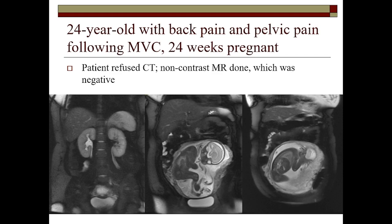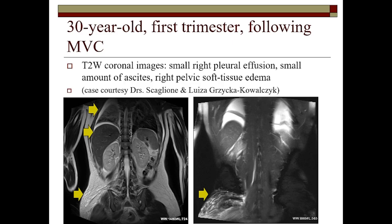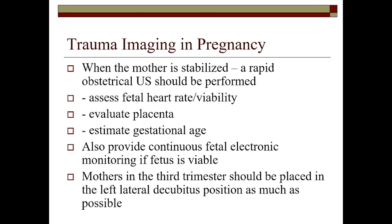Here is a case from my institution a few years ago. The patient was involved in a motor vehicle collision, 24 weeks pregnant. She refused CT because of ionizing radiation concerns. She was stable and had back and pelvic pain. These representative coronal images showed the exam was negative, so we were able to reassure the patient and the clinical team — with a little bit of right hydronephrosis expected at this stage of pregnancy. In contrast, here is an example of a positive MRI scan showing perihepatic fluid, a right pleural effusion, and soft tissue injury, very well demonstrated without contrast.